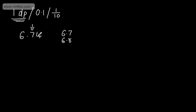If this number is 5 or more, we're going to round to 6.8. If it's 4 or less, we're going to round to 6.7. So we say: if it's 5 or more, we round up; if it's 4 or less, we round down.